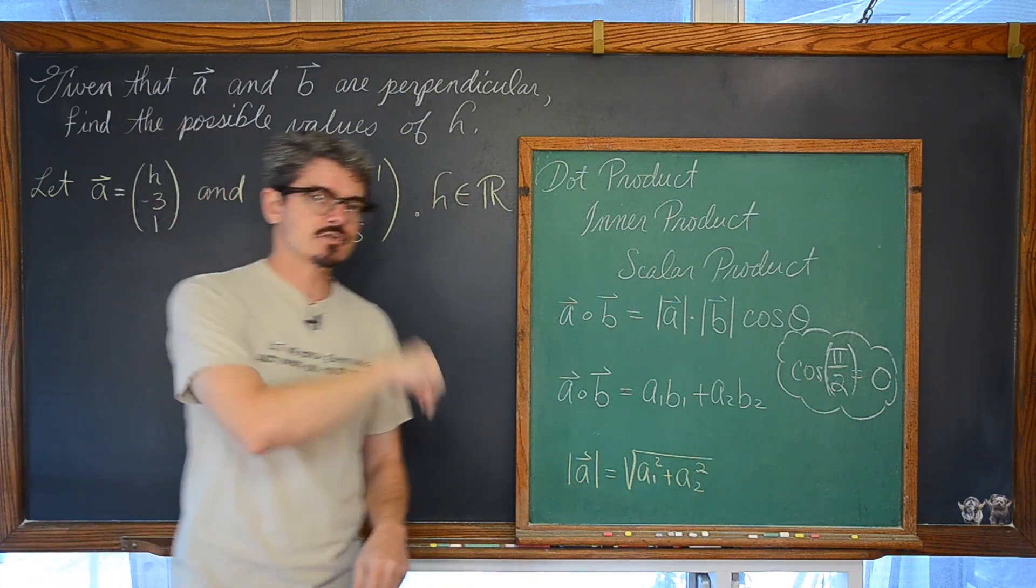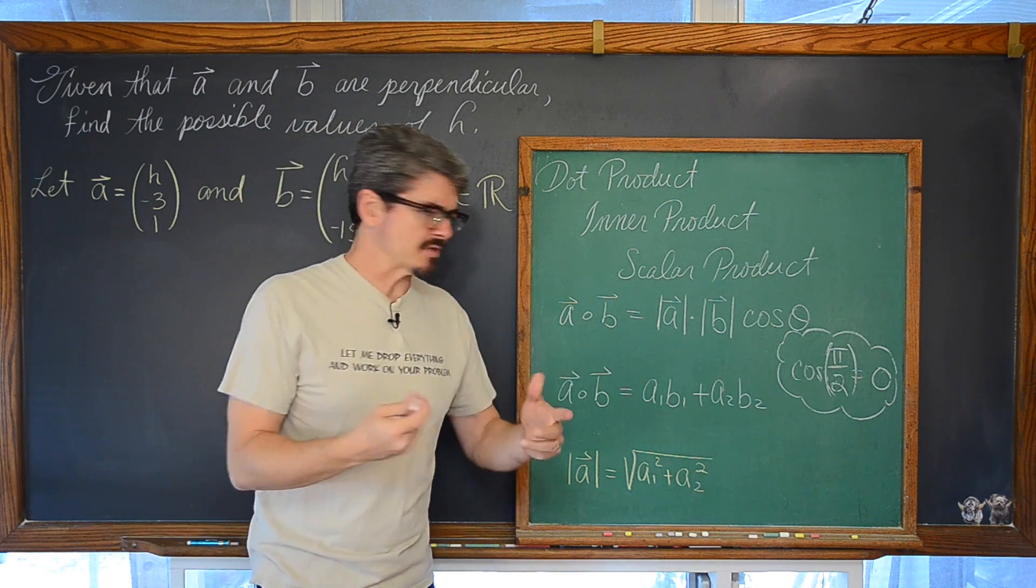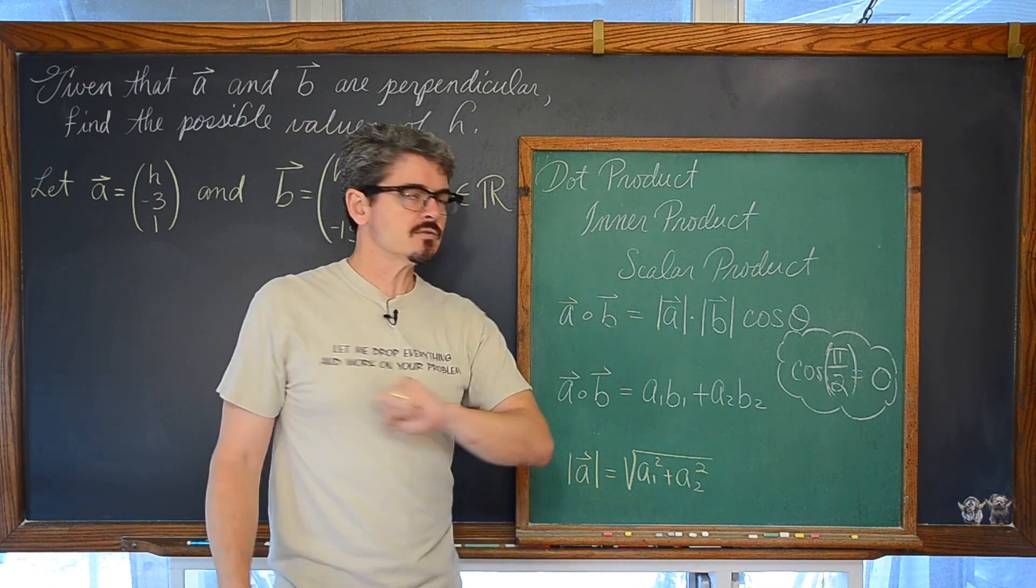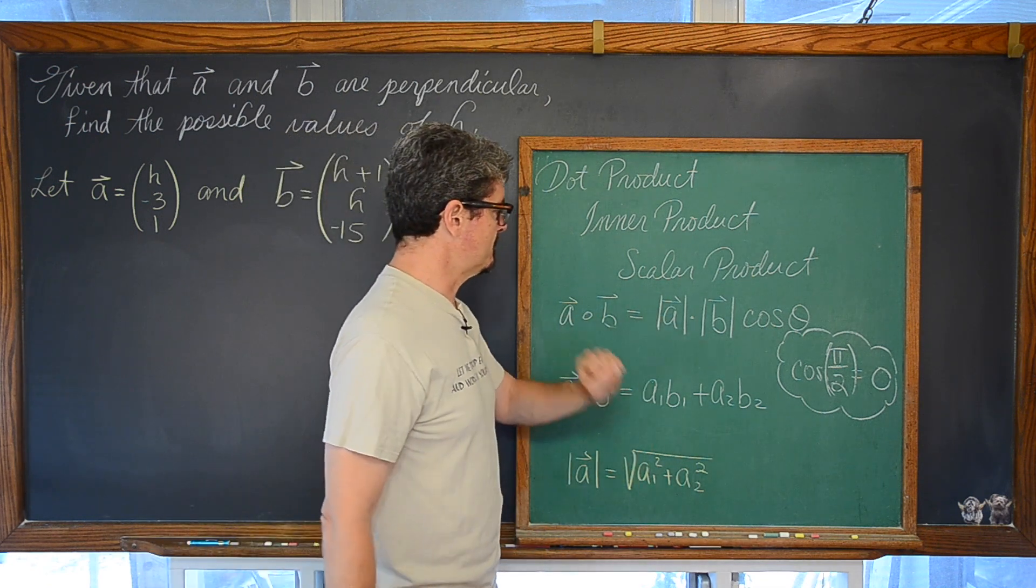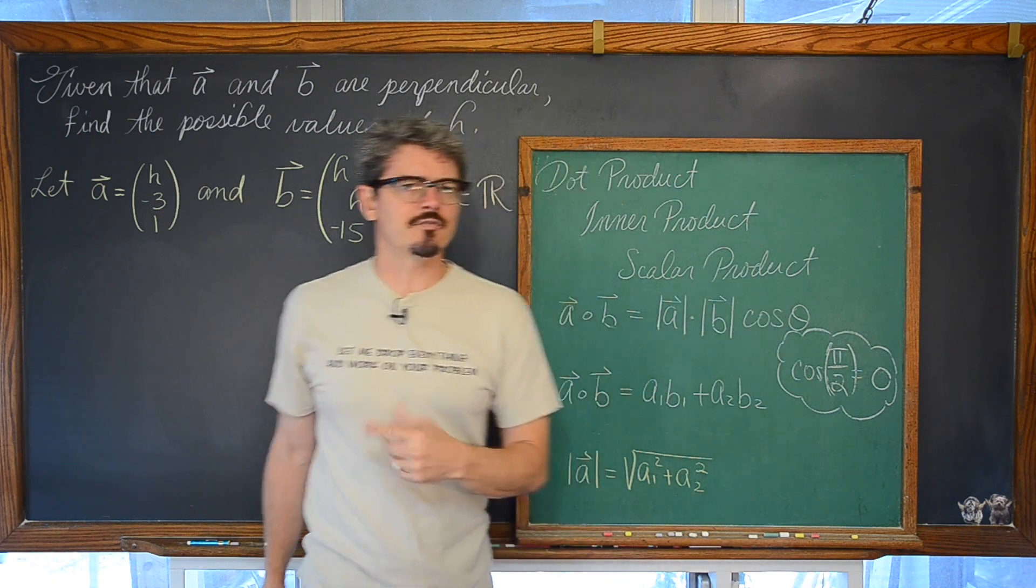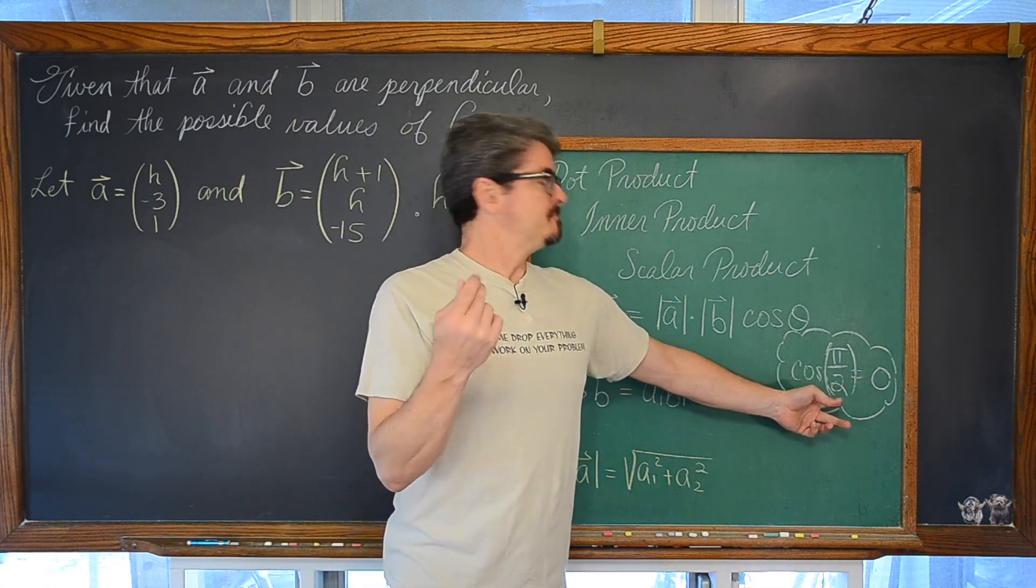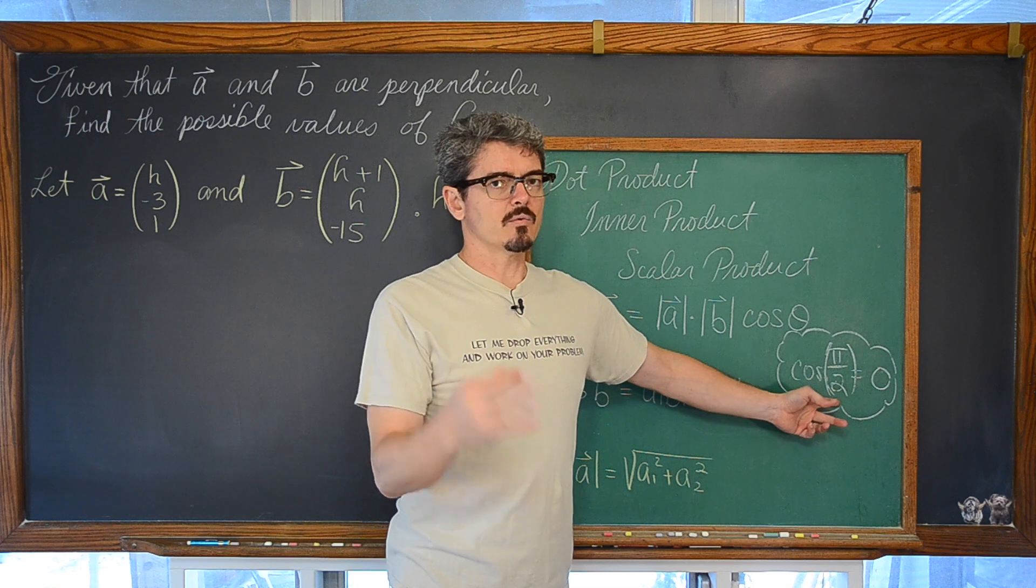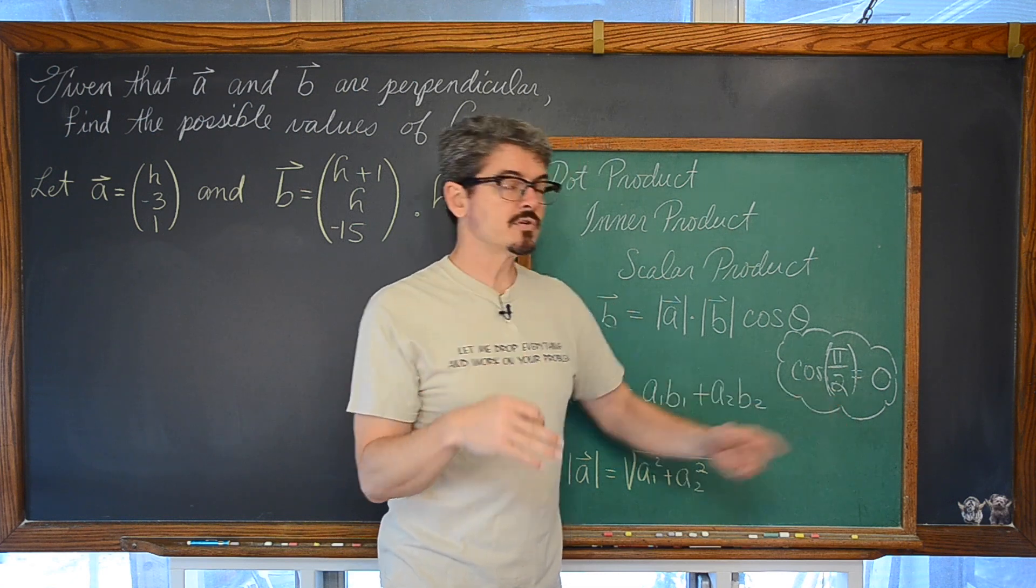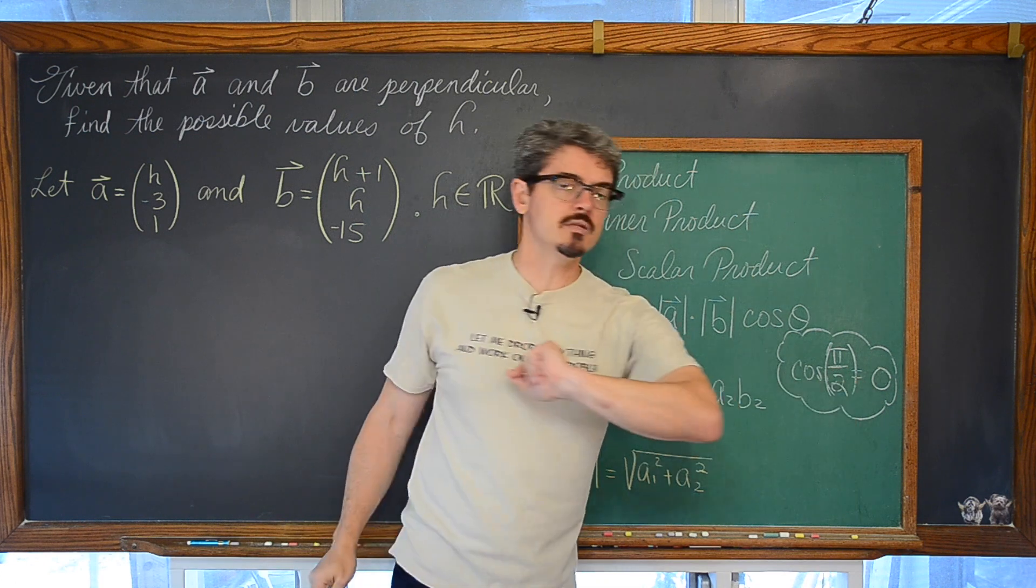Now why is that? Well there are two definitions of dot product and I think the first one here will jog your memory or help you understand this. The dot product of two vectors is equal to the magnitude of vector A times the magnitude of vector B times the cosine of theta. And if your two vectors are perpendicular or orthogonal, meaning that there is basically 90 degrees or pi over 2 radians between those two vectors, well the cosine of pi over 2 is equal to zero.